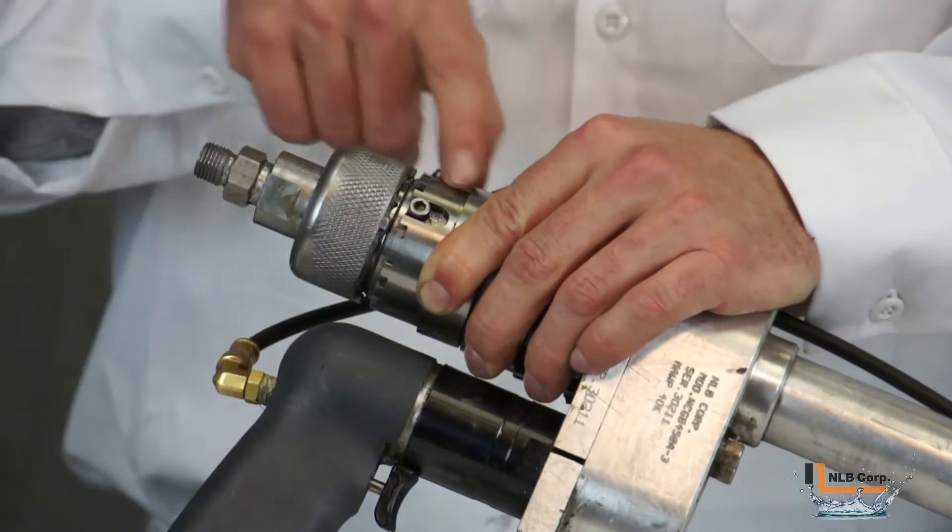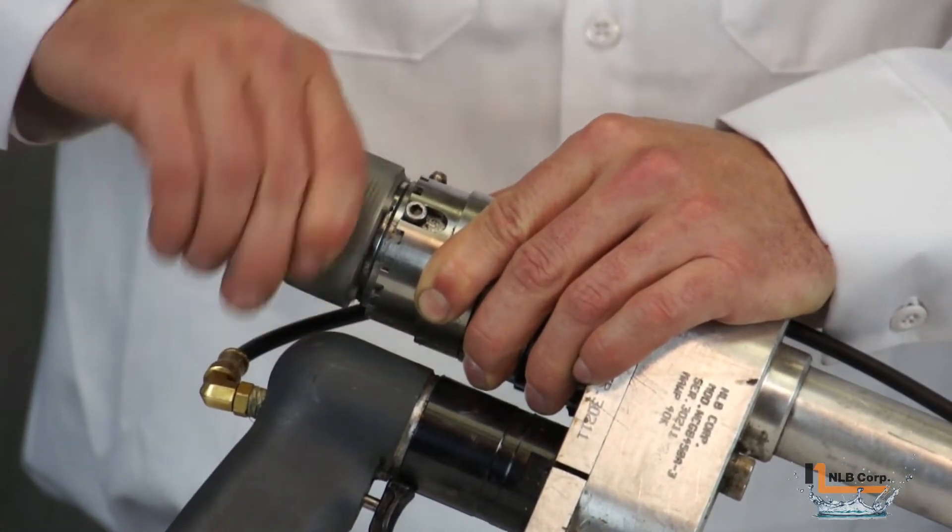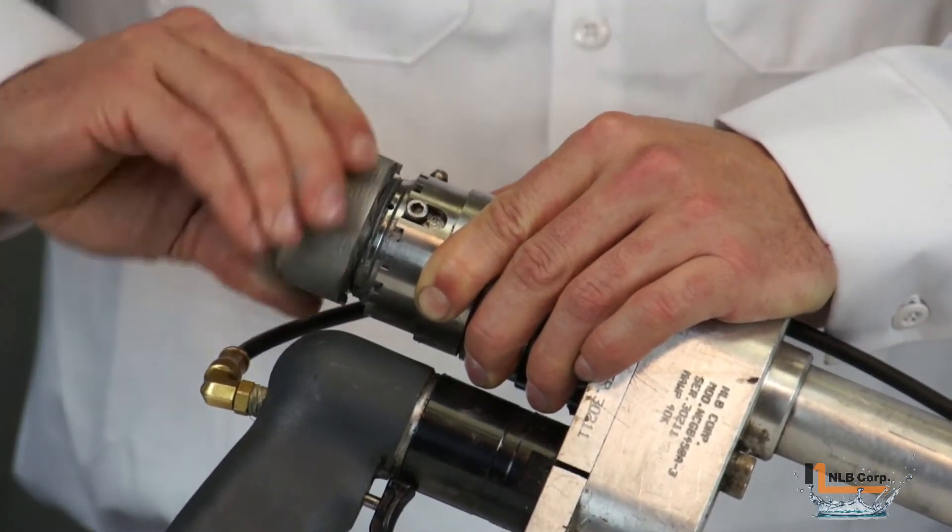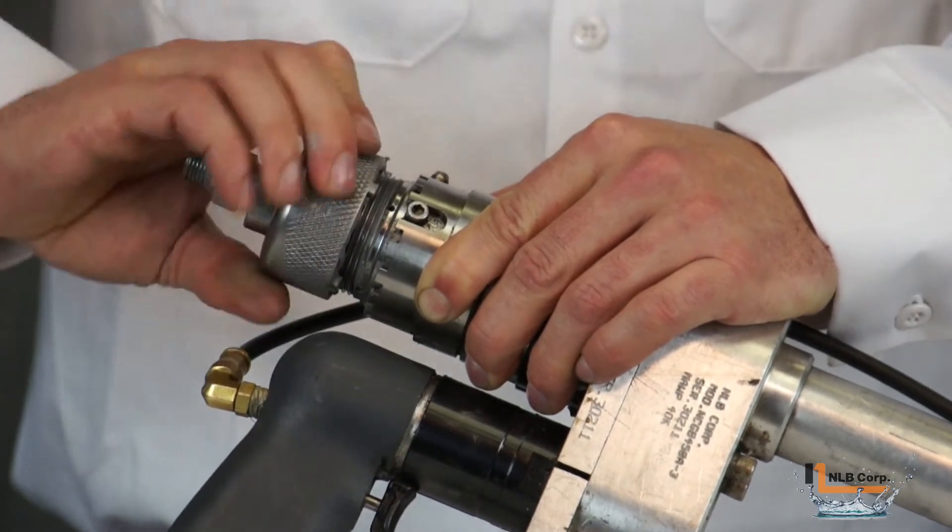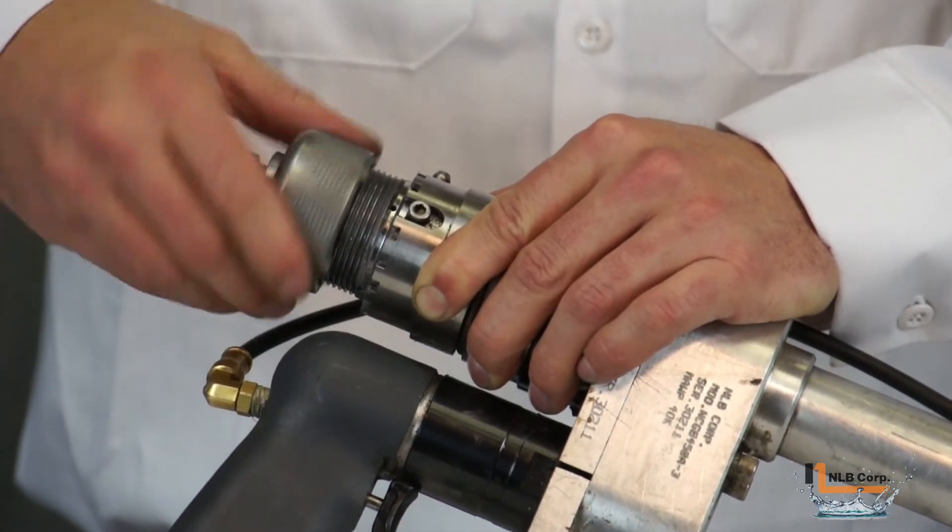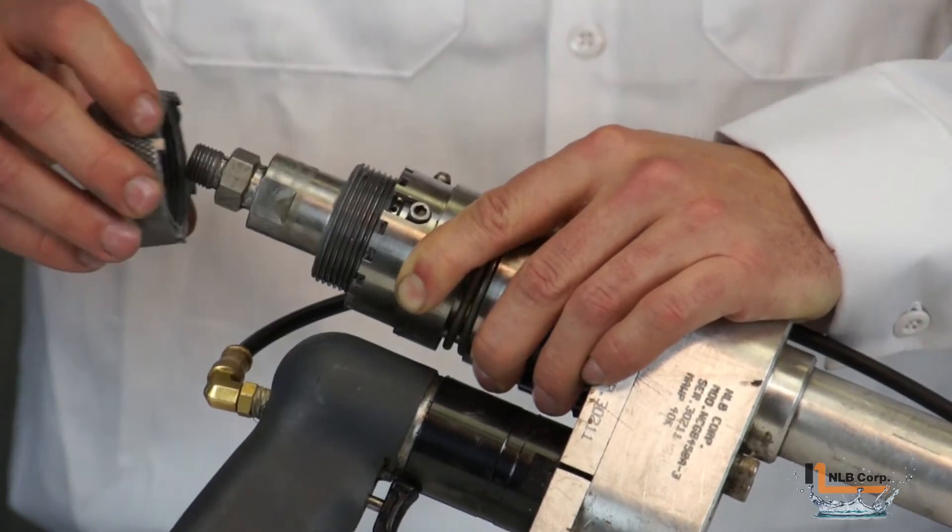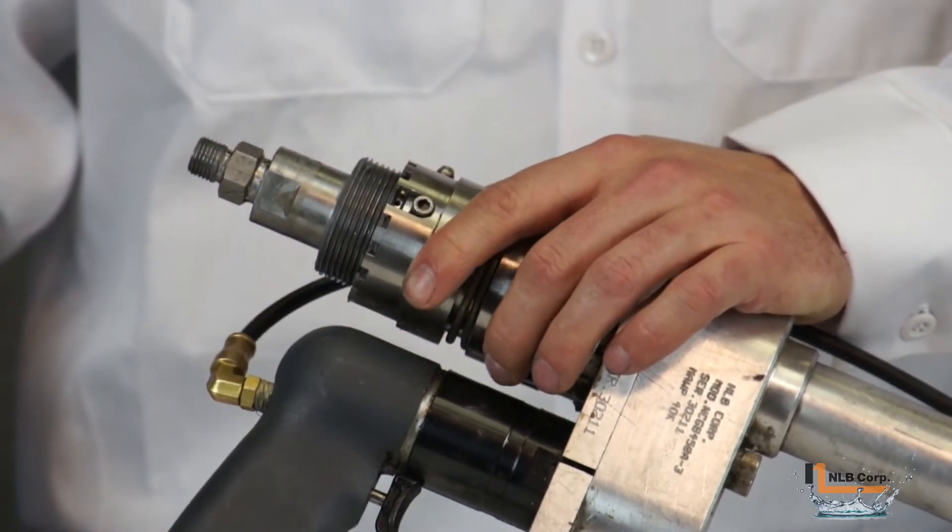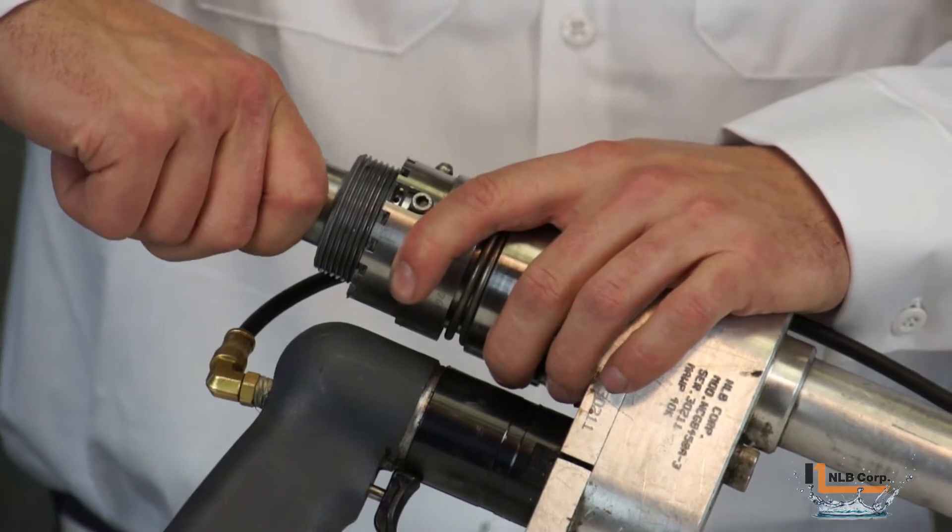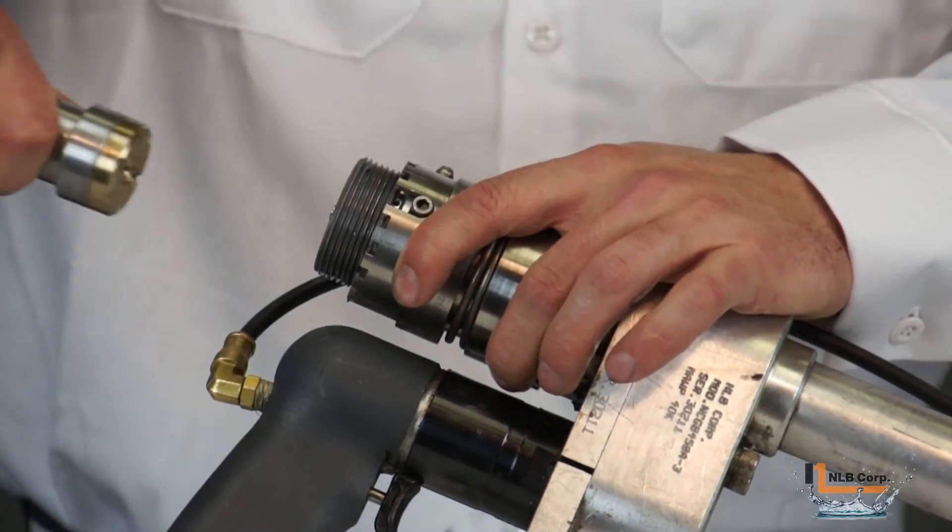To begin the process of replacing the seal, pull back the anti-rotation sleeve and unscrew the inlet end cap. With the end cap removed, you can now pull out the high pressure seal housing.